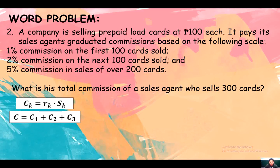What is the total commission of a sales agent who sells 300 cards? He sold 300 cards, so he surpassed the 1% and 2% commission tiers. Did he surpass the 5% commission? Yes, because the condition for the third commission is 5% on sales over 200 cards. Since he sold beyond 200 cards, he receives 5% commission on that excess.